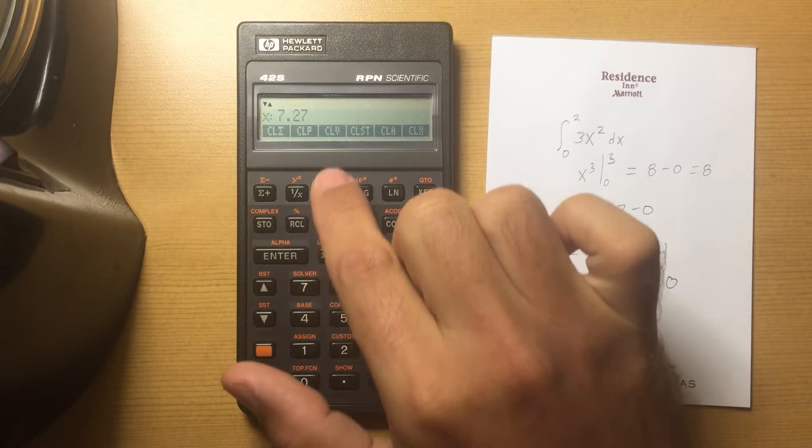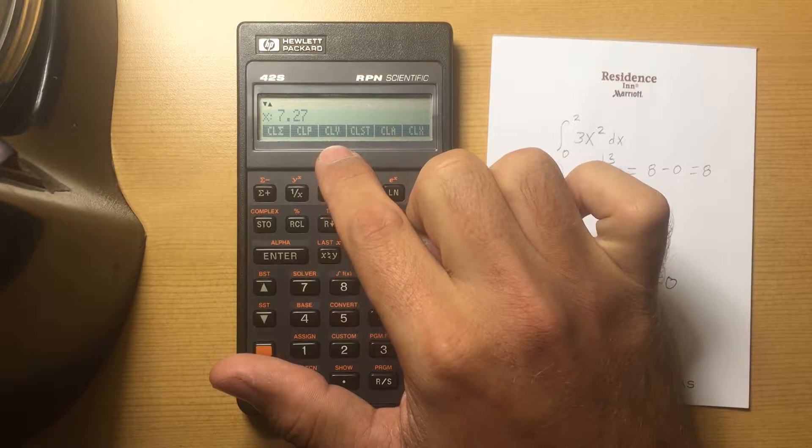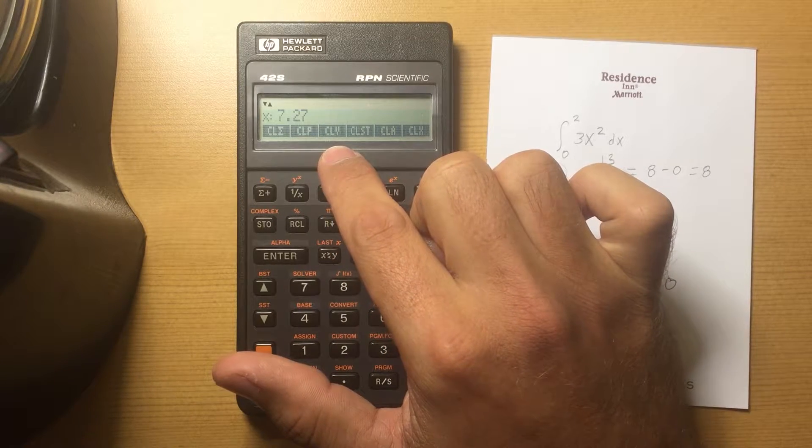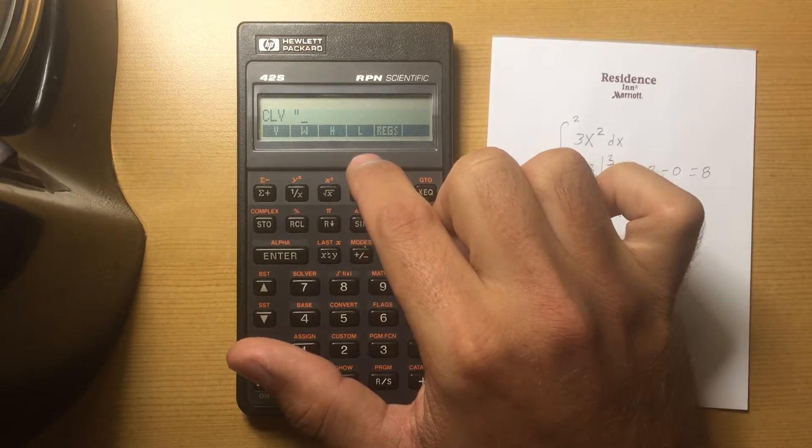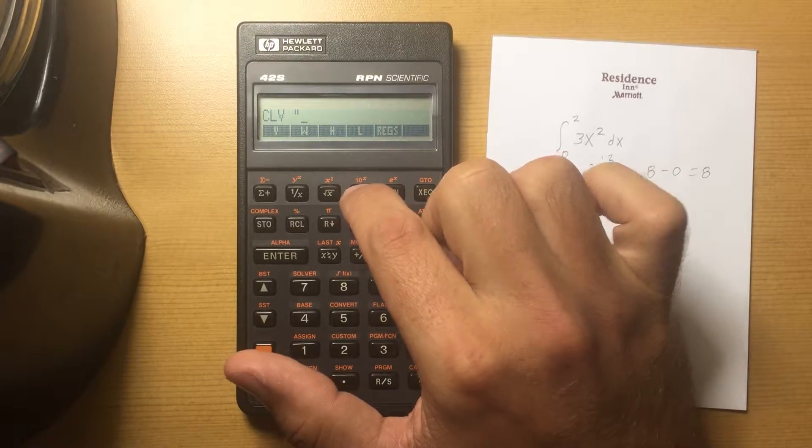CLV is Clear Variables. This will show you a list of the variables that you have stored. Pressing one will clear it.